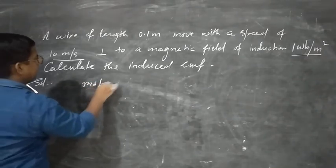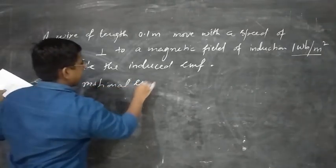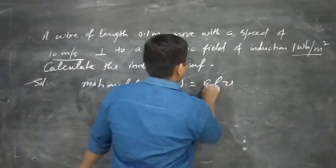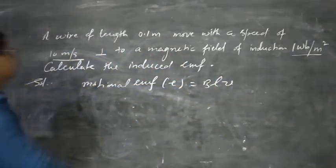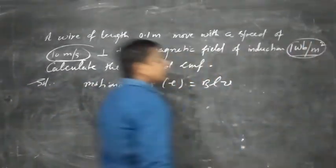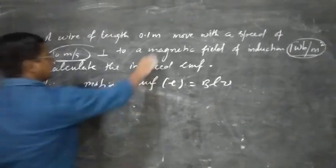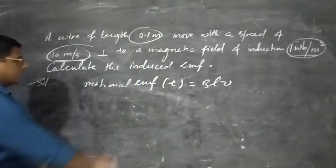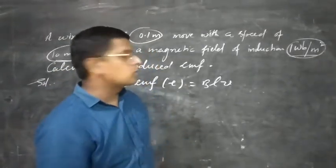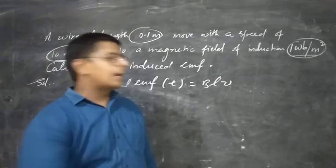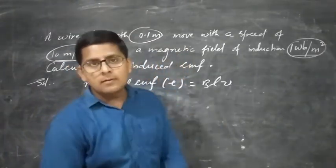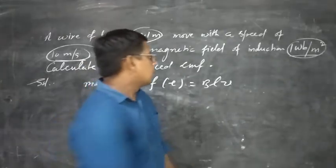For motional EMF, we have the formula E is equal to BLV. Here in this question, velocity is given, B is given, and L is the length of the wire. Now, 1 Weber per meter square — how can you write the SI unit of B?